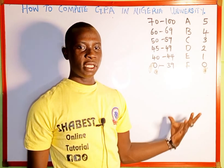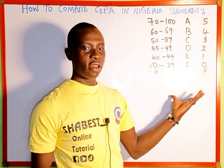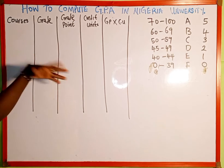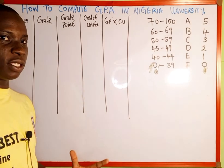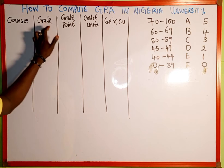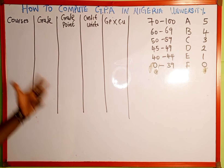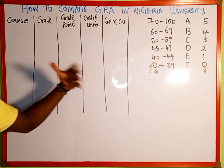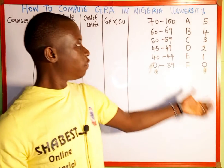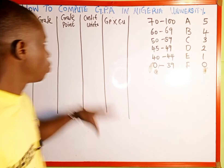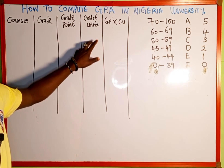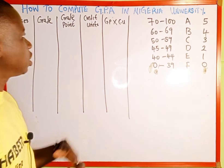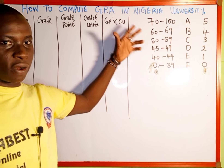The next thing we are going to do is to tabulate our data. Here is the table. The first column represents all courses, which means the total number of courses you registered in that particular semester. The next column is the grade — the letter grade, whether you scored A, B, C, or D in that course. The next column is the grade point. The next column is the credit unit — the number of credit units for each course you registered. And the last column is GP, which is the grade point multiplied by the credit unit.